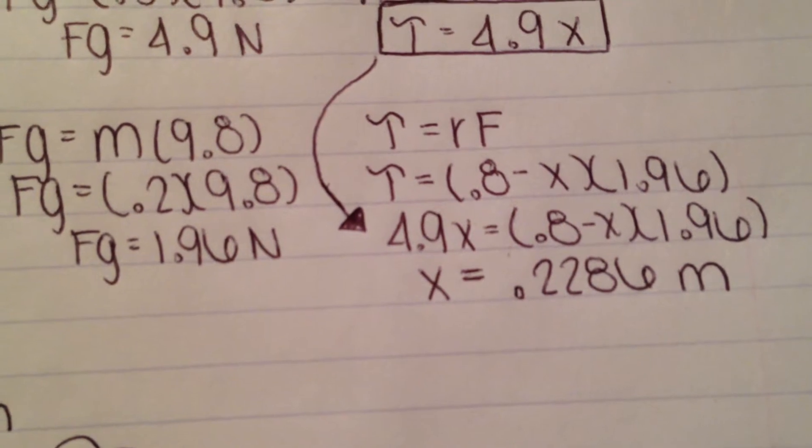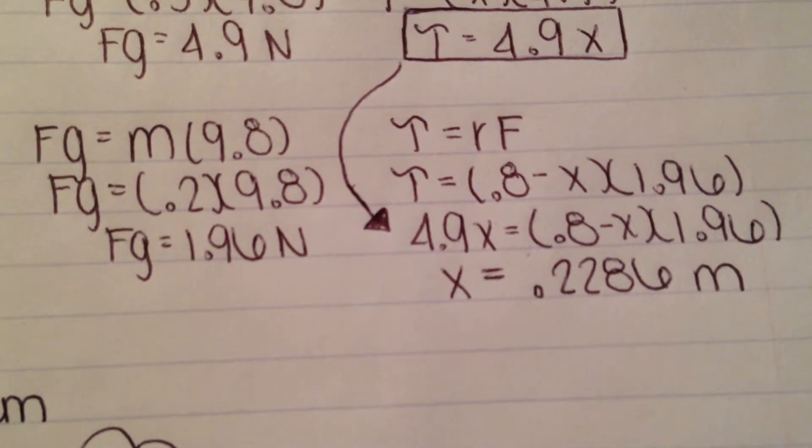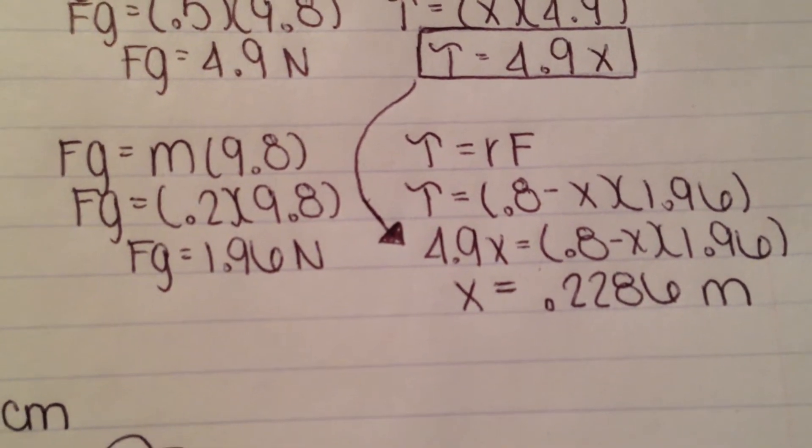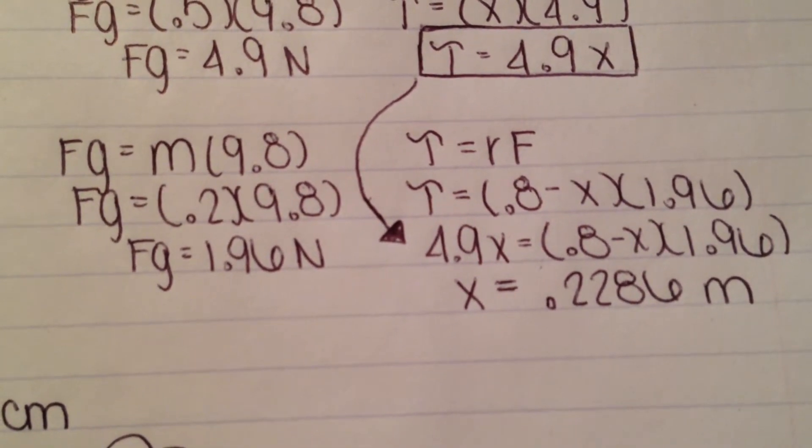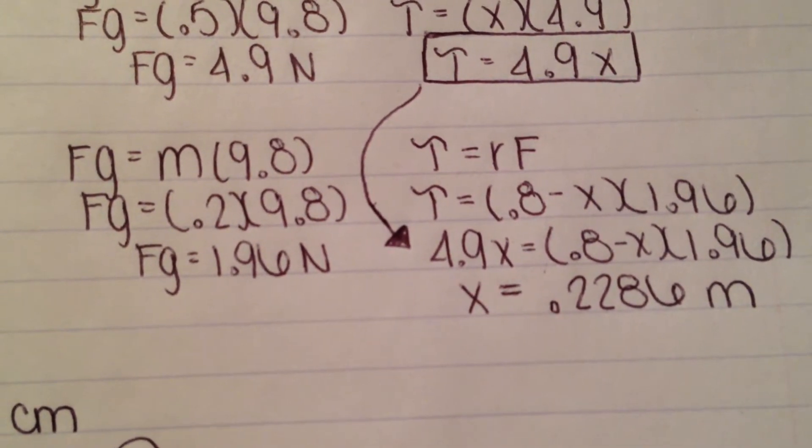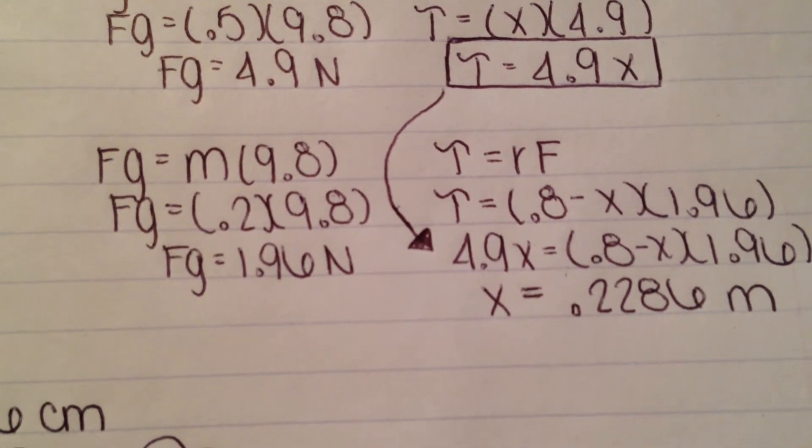Now, we need to put what we have into the torque formula for the 200 gram mass. Torque equals radius times force. You plug in 0.8 minus x for the radius and 1.96 in for the force. Since torque is always equal on both sides, we bring the torque from the 500 gram mass that we already figured out and substitute it into this equation.